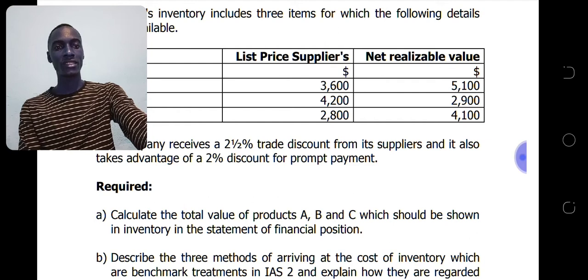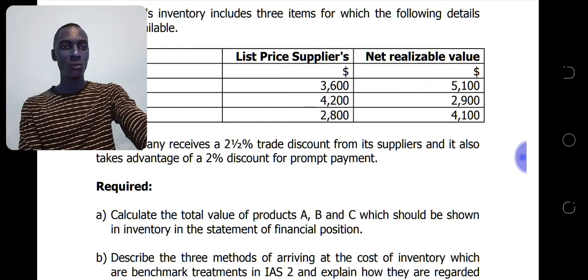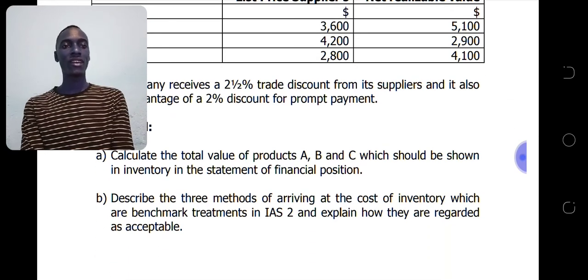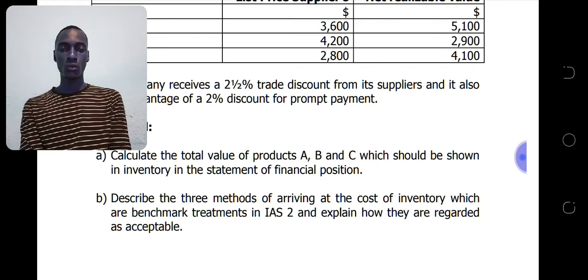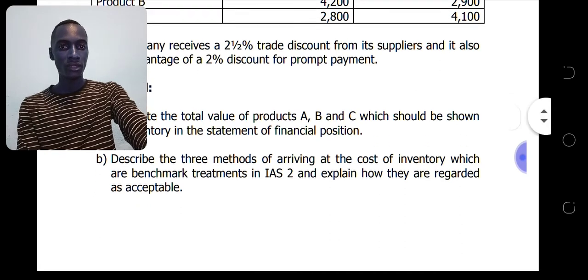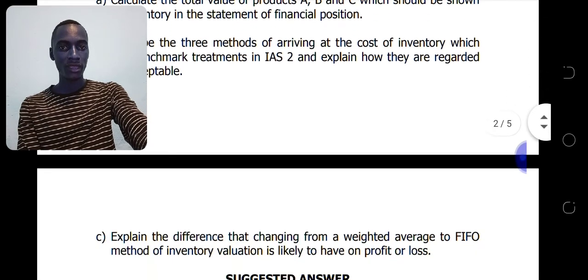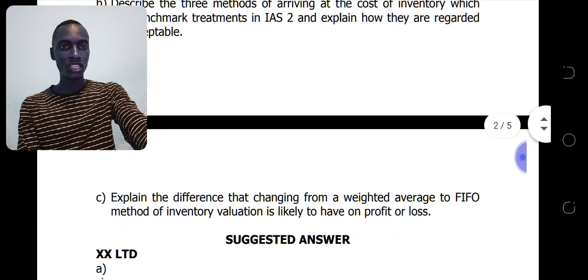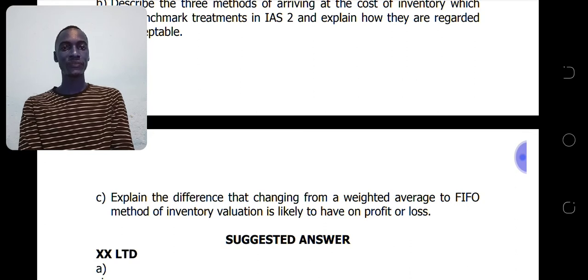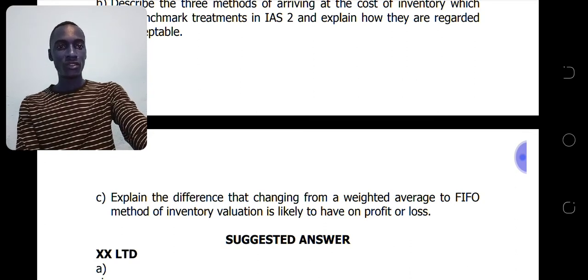You are required to calculate the total value of products A, B, and C to be shown in inventory in the statement of financial position. Then describe the three methods of arriving at the cost of inventory which are benchmark treatments in IAS2, and explain how these are regarded as acceptable. Also explain the difference that changing from a weighted average to a FIFO method of inventory costing is likely to have on profit.